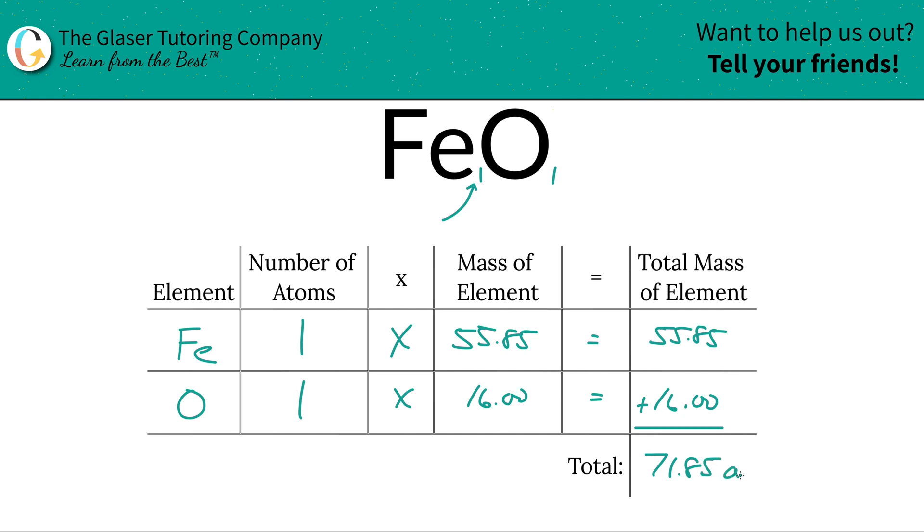And the units here are in terms of AMU because it's atomic mass units because we're finding the molecular mass. And that's it. Now you know how to find the molecular mass of iron two oxide.